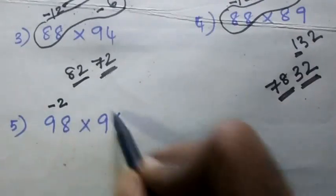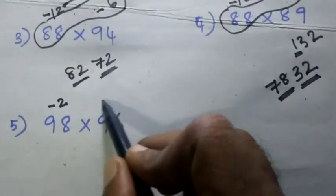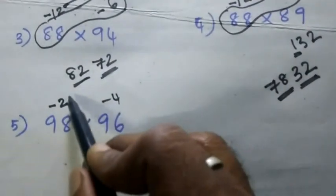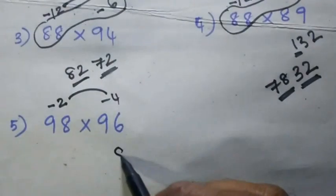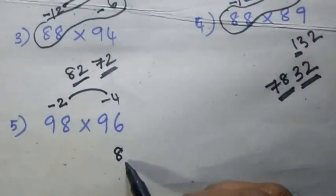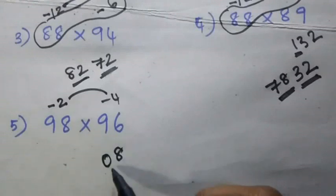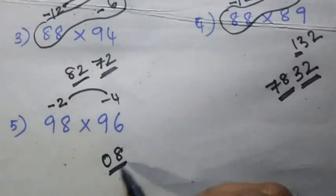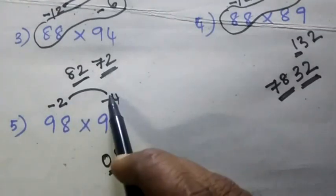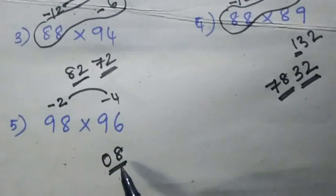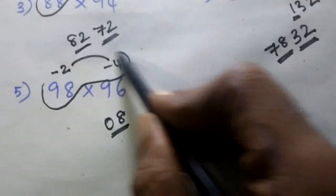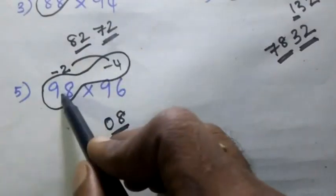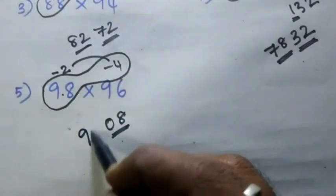Here the 100 is less than 2. Here the 400 is less than 4. So 2 into 4 is 8 — two digits. The answer is 94.